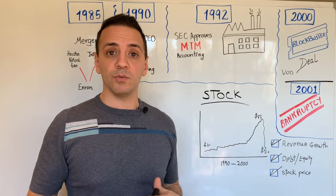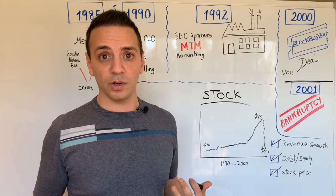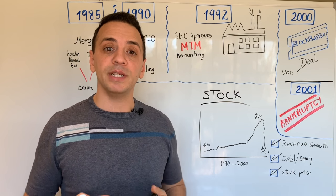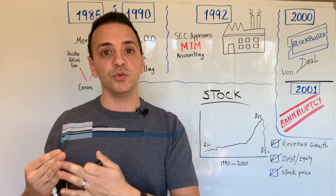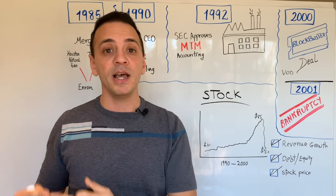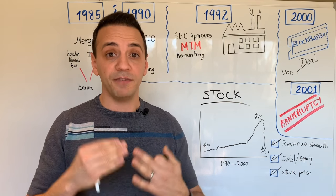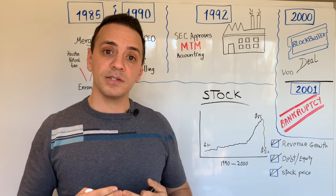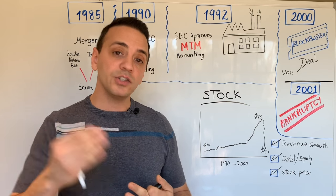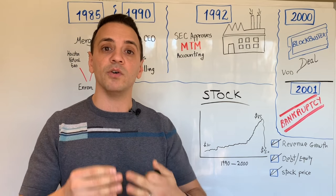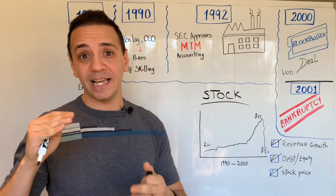The other big consequence of the fall of Enron was the enactment of the Sarbanes-Oxley Act, also known as SOX 404. Sarbanes-Oxley states that every company has to have a framework of internal controls. The purpose of those internal controls is to ensure the integrity of its financial statements, and management has to sign off on both the integrity of the financial statements and the effectiveness of its internal controls. Sarbanes-Oxley also states that auditors who sign off on the financial statements must also sign off on the effectiveness of the company's internal controls.